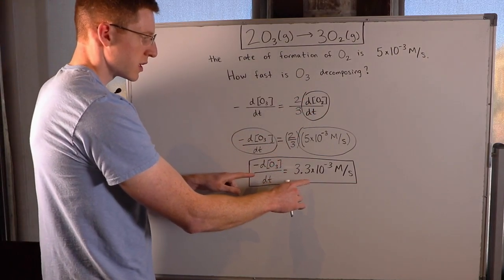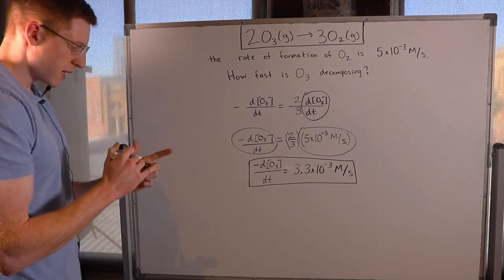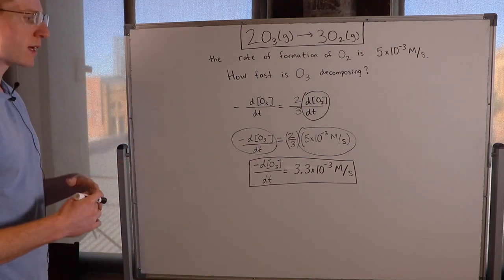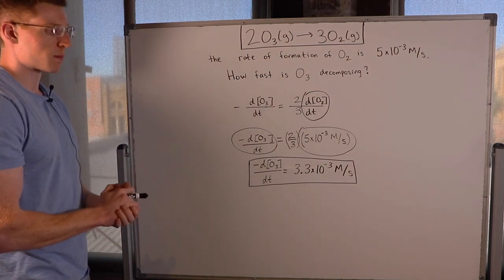So if I simply solve for this, which I did here with the calculator, you find that O3 is decomposing at a rate of 3.3 times 10 to the negative 3 molar per second.